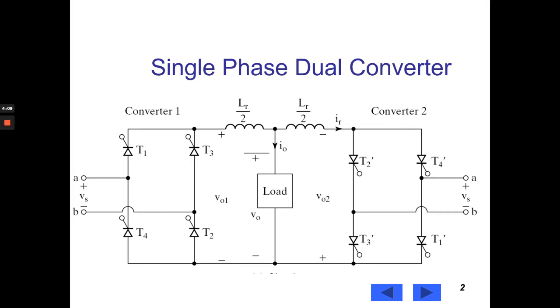Whereas for values alpha greater than 90 degrees, it works in the inverting mode making its average output voltage negative. The load current, however, remains positive. Therefore, the first full converter operates in the fourth quadrant allowing the energy to flow from load to source, making the regenerative braking possible.